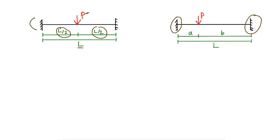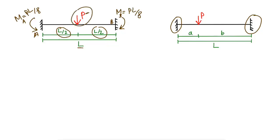Keep in mind the maximum bending moment will always be at the fixed support. This moment at support A will be equal to PL/8, and at support B it will also be equal to PL/8, because the load is acting at the center of the beam — L/2 from each end. So the formula is PL/8, where P is the applied load.